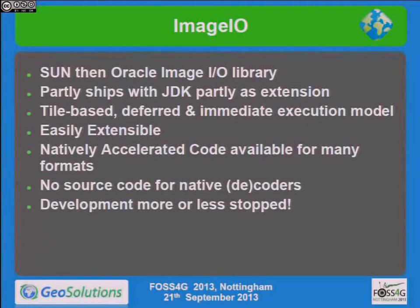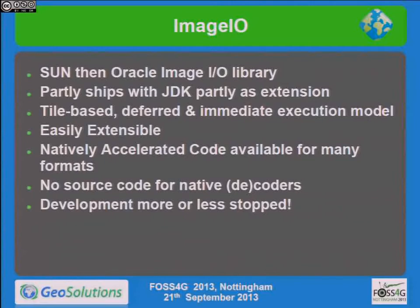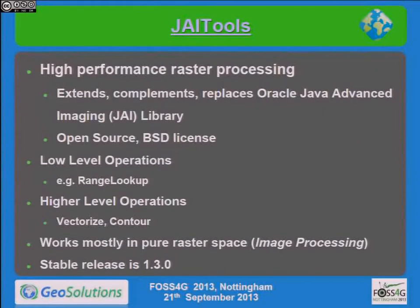Image.io is a standard library from Sun, then Oracle, for doing I/O on raster data. It partly ships with the JDK and partly requires a separate extension. It integrates nicely with JAI, supporting both tile-based deferred execution and immediate execution — where you load everything into memory as soon as possible. You use deferred execution when processing large images in chunks, and immediate execution when you have a WMS and want to be as fast as possible. It has the same problems as JAI: native source code unavailable, and the external extensions have received little attention in recent years.